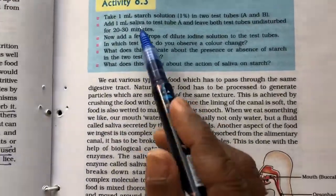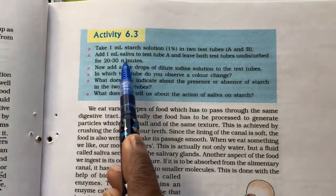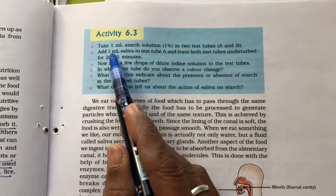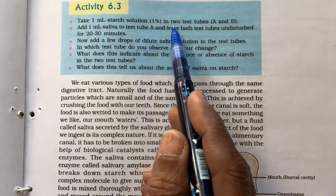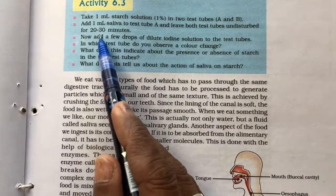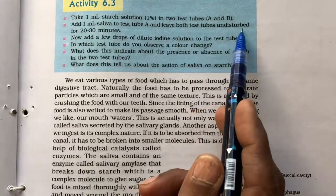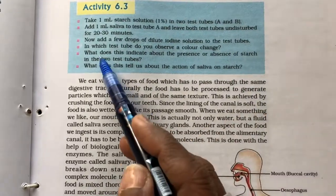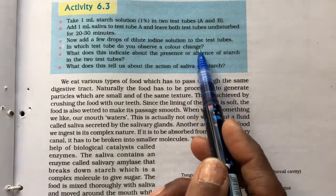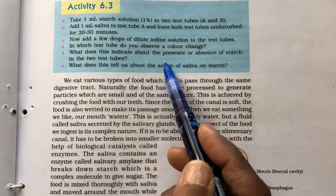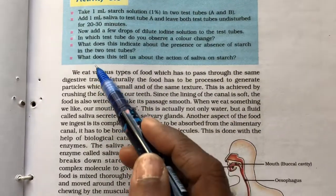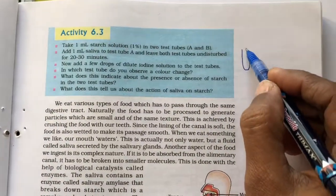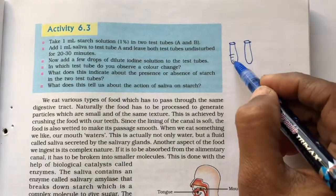Now before going into that, let us see there is an activity and that how the starch is digested even within our mouth in the oral cavity. Let us take 1 ml starch solution 1% in 2 test tubes A and B. Add 1 ml saliva to the test tube A and leave both test tubes undisturbed for 20 to 30 minutes. Now add a few drops of dilute iodine solution to the test tubes. In which test tube do we observe a color change? What does this indicate about the presence or absence of starch in the two test tubes? What does this tell about the action of saliva on the starch?